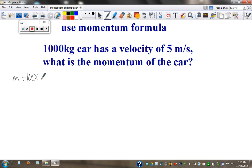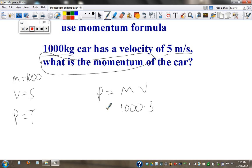And then here's your setup. Mass equals a thousand. Velocity equals five. And it's asking for what is the momentum, so P equals question mark. The formula is P equals MV. P equals one thousand times five. P equals five thousand. And the units are kilogram meters per second.